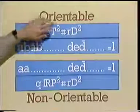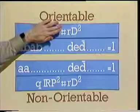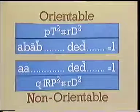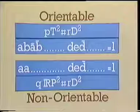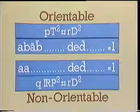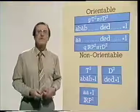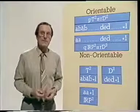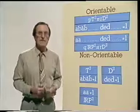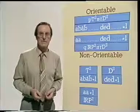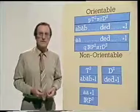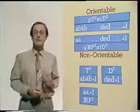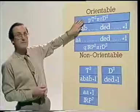And if P equals 0, so that there are no handles, then R equals 1 gives the disc, R equals 2 the disc with a hole cut out, R equals 3 the disc with two holes, and so on. And of course, we mustn't forget the special case mentioned earlier, the sphere. It's orientable, but it has no handles and no boundary curves. That's why it can't be constructed using our other three ingredients, and it doesn't have an edge equation of this canonical form.